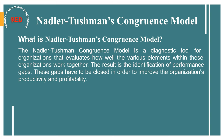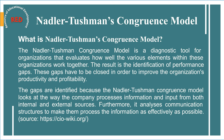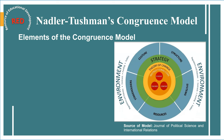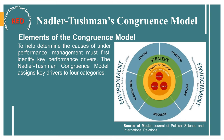The Nadler-Tushman congruence model is a diagnostic tool for organizations that evaluates how well the various elements within the organization work together. The result is the identification of performance gaps, which have to be closed in order to improve the organization's productivity and profitability. The model looks at the way the company processes information and input from both internal and external sources, and analyzes communication structures. If a change impacts one area, it will have a domino effect on the other areas. As a leader, you need to understand how the four critical components — task, people, organizational structure, and culture — work in conjunction to transform inputs into outputs.